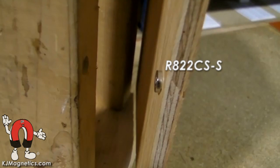In the first example, we've mounted an R822CS-S to the door side of our little demo unit. On the frame side, we've used a galvanized nail to act as the strike plate on which the magnet will catch. Pretty simple.